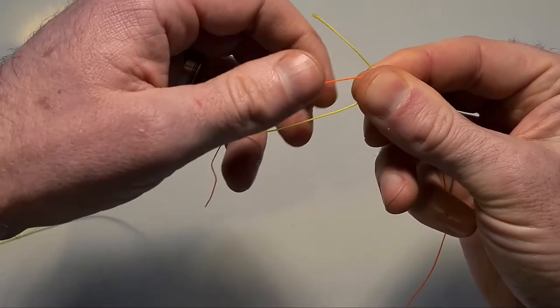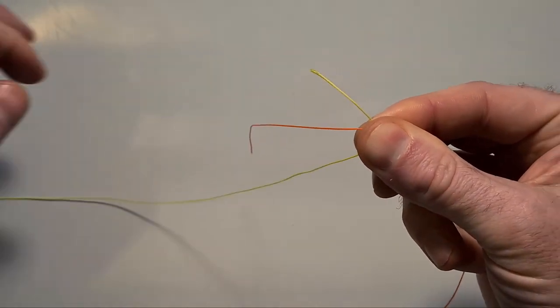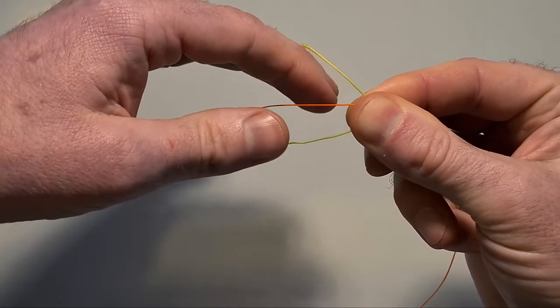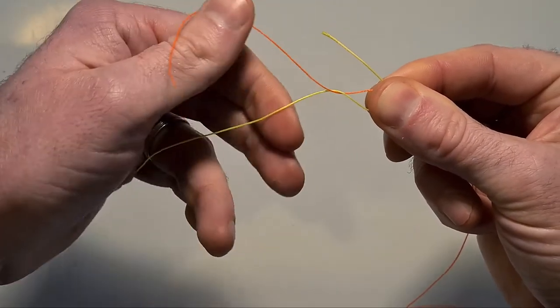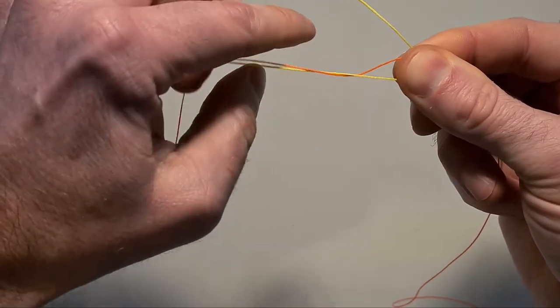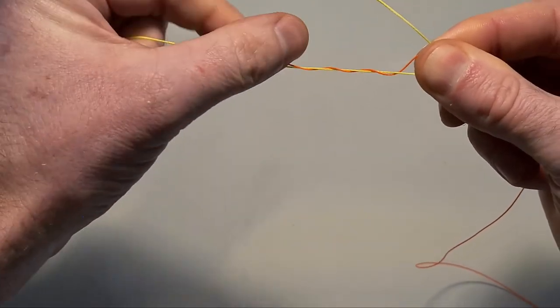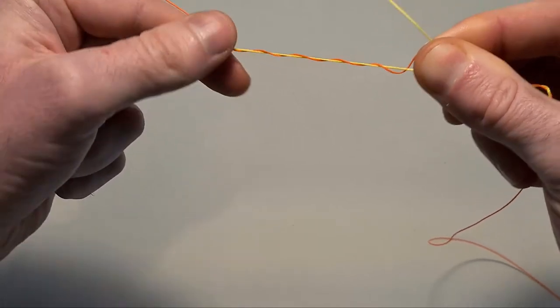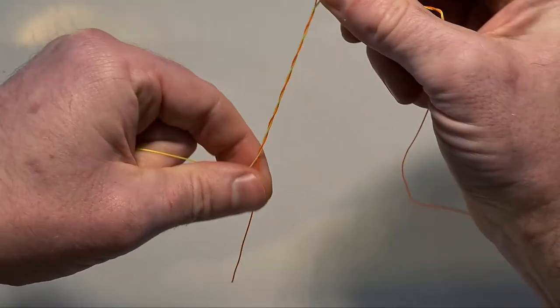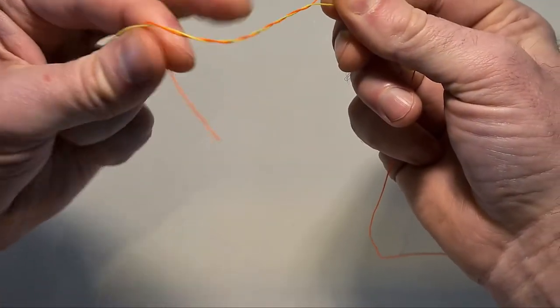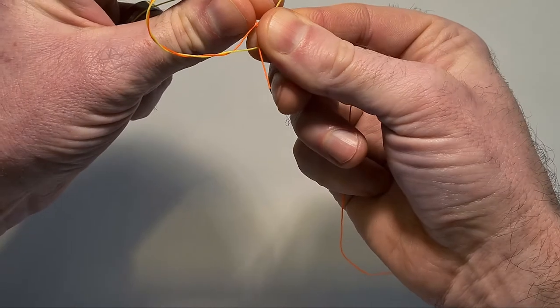And then I'm going to do almost exactly the same with this side now. Now the difference is this time around I'm not going to go over and under, I'm going to go under and over, so the opposite of what we did before. Two, three, four, and five. And again just like we did before but the opposite, I'm going to put it through the back of this loop here and put this down in direction.